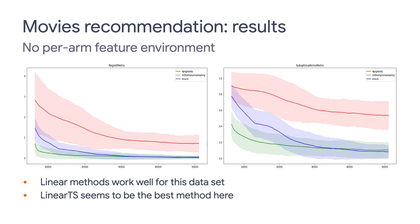The results shown here are for the no per-arm feature setting. You can see that both the regret and suboptimal arms metrics are dropping as the training progresses. Linear UCB and linear Thompson sampling have very similar performance, which is not very surprising as they have very similar algorithms. On the other hand, neural epsilon greedy is not doing very well on this problem. After 50,000 iterations, the metrics are still far away from that of linear methods. Nonetheless, even the epsilon greedy algorithm manages to find the best movie about half the time, which is not too bad.